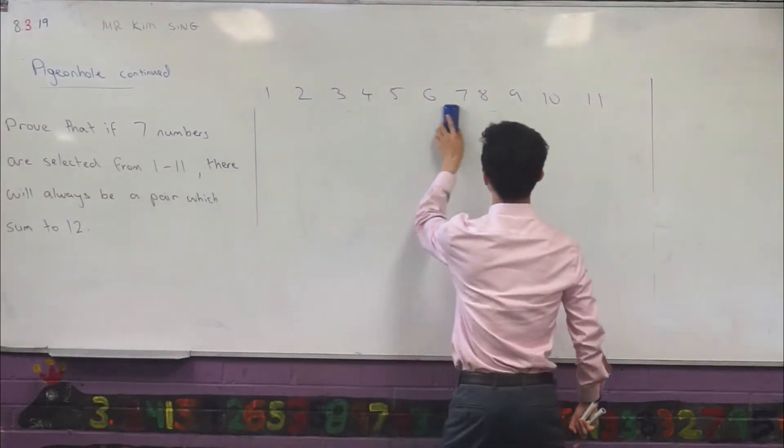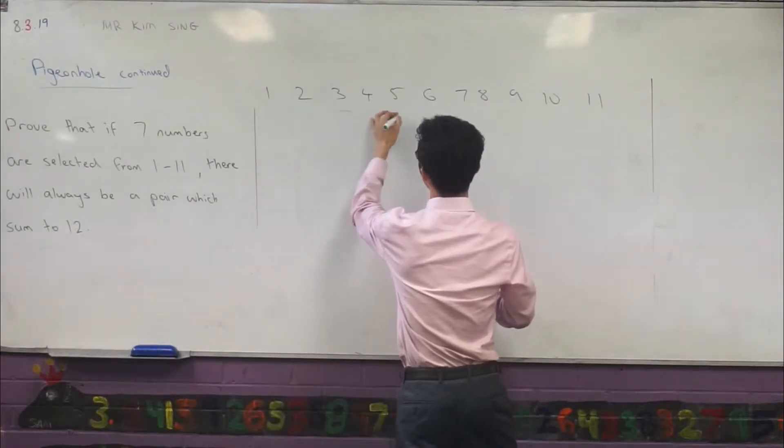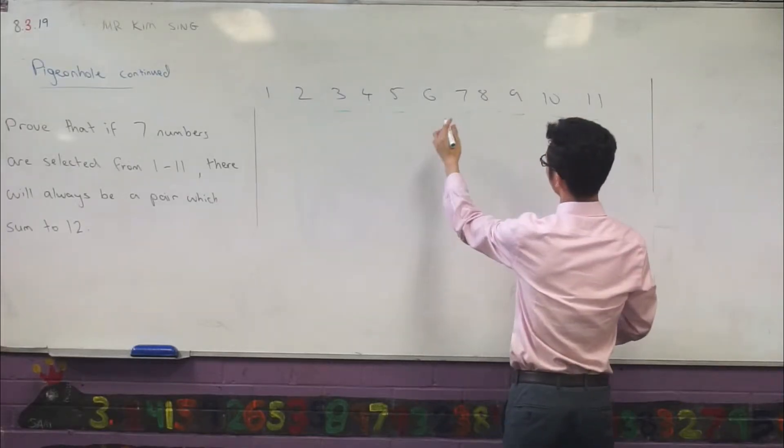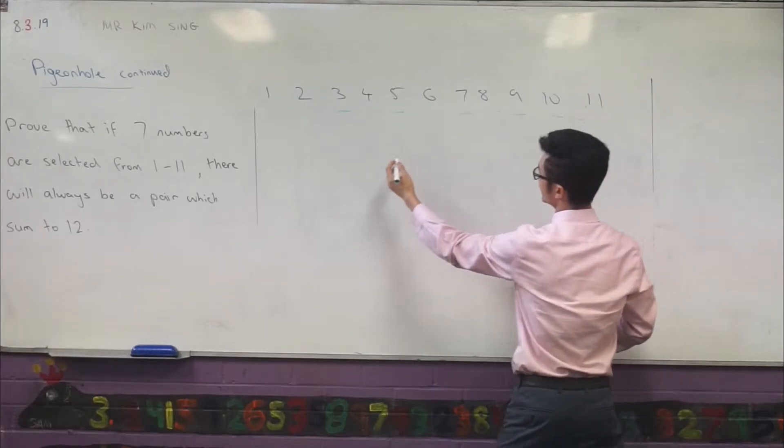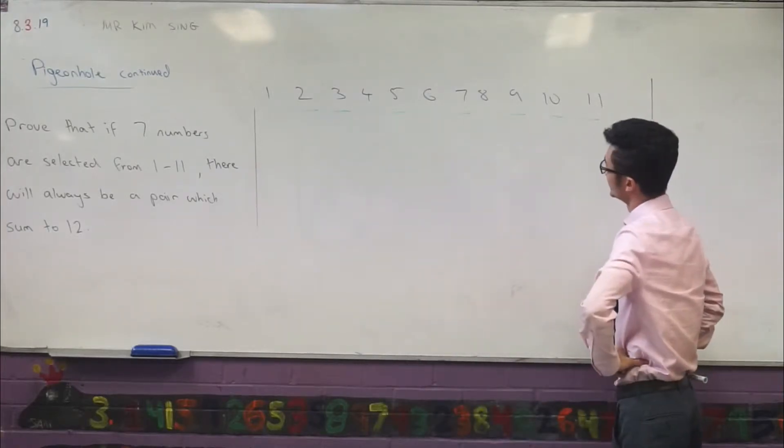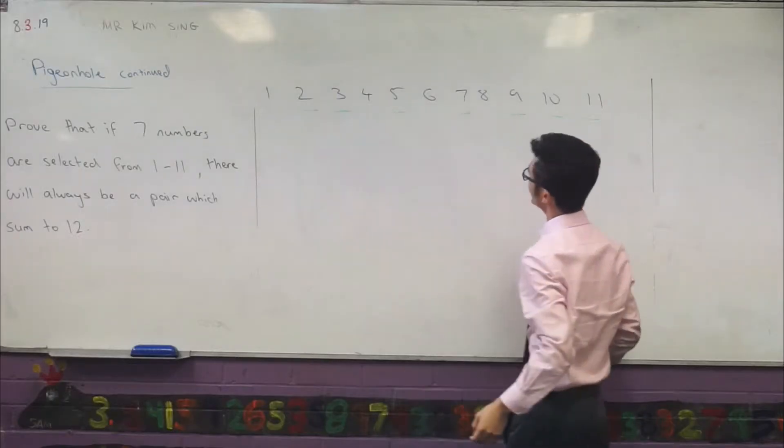Start here maybe. And again, let's check: do we have a pair that sums to 12? Yep, we've got here 2 and 10. In fact, we have 3 and 9 as well.